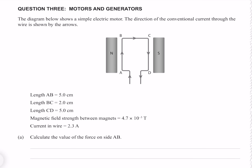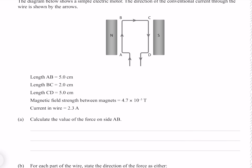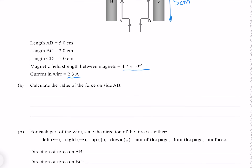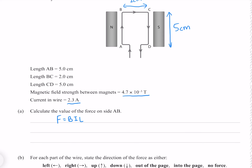Question 3. The diagram below shows a simple electric motor. The direction of conventional current is shown by the arrows. The length of AB and CD is 5 centimeters, BC is 2 centimeters. We are given the magnetic field strength and current in the wire. Calculate the force on side AB using F = BIL, where B is 4.7 × 10⁻³ tesla, I is 2.3 amps, and the length is 0.05 meters. That gives 5.4 × 10⁻⁴ newtons.